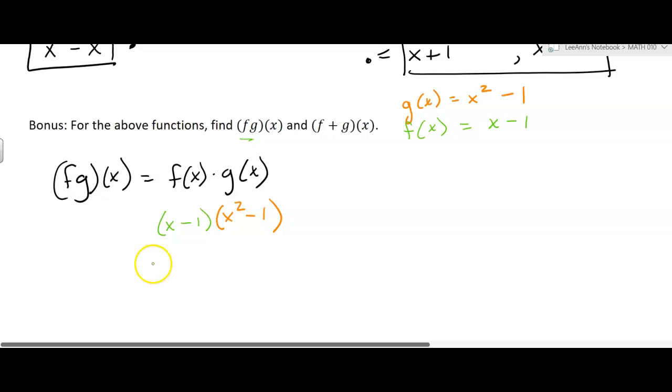And we're going to go ahead and multiply that out. We're going to get x cubed minus x minus x squared plus 1. Let me put it in standard polynomial form. And we would write it like that.